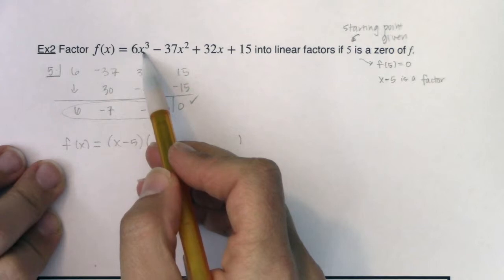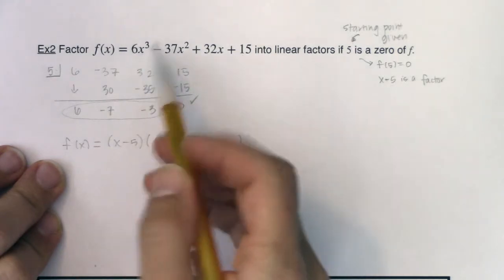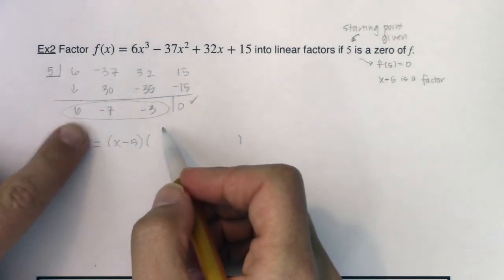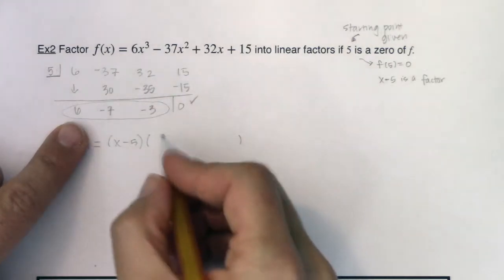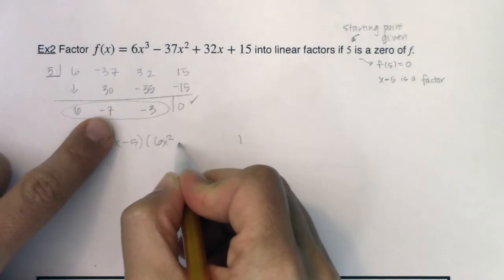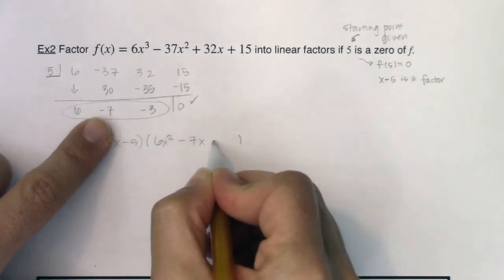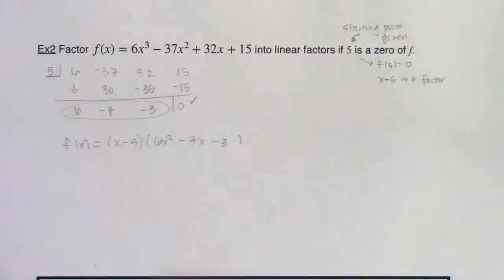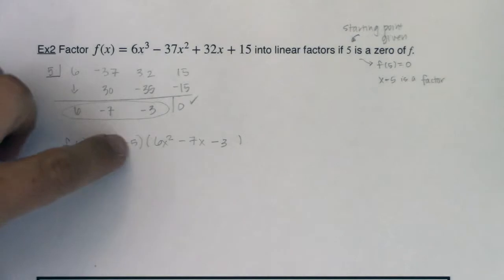And you're going to use those numbers, those coefficients to help you. If I took out a linear term from 6x³, that means my lead power now is x². You're always going to go down by one power. So I'm going to start with 6x² and then I'm going to just use these as coefficients in descending order. So this will be -7x - 3.